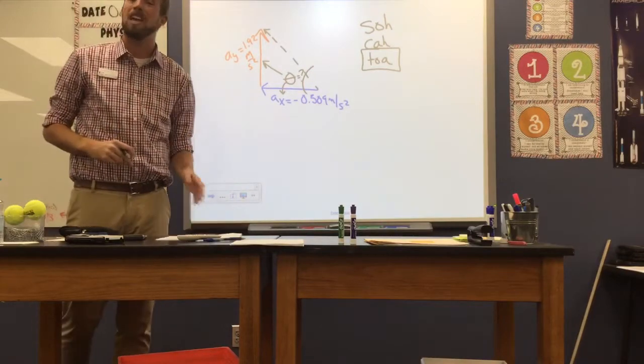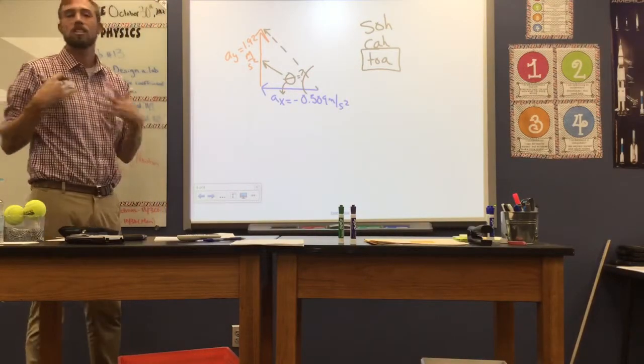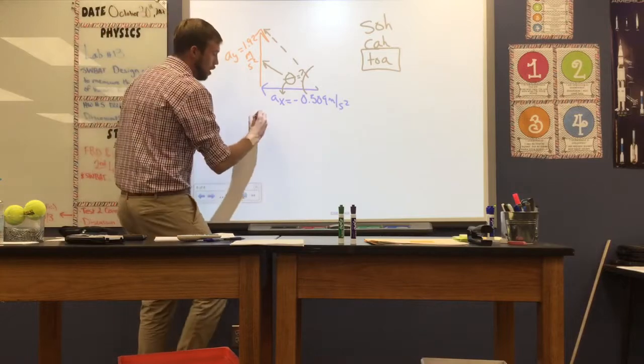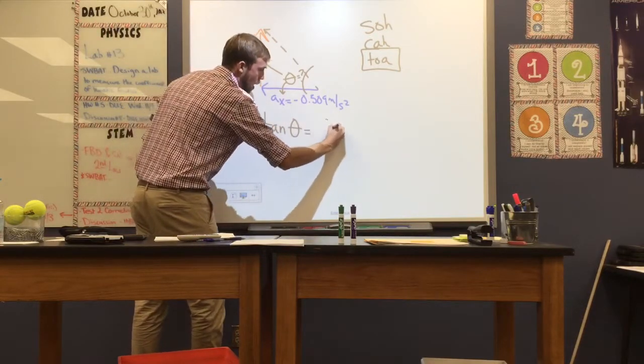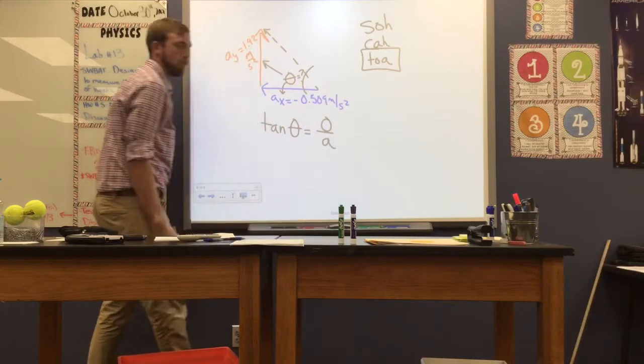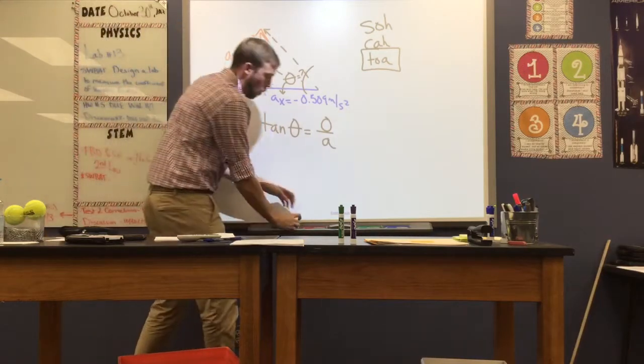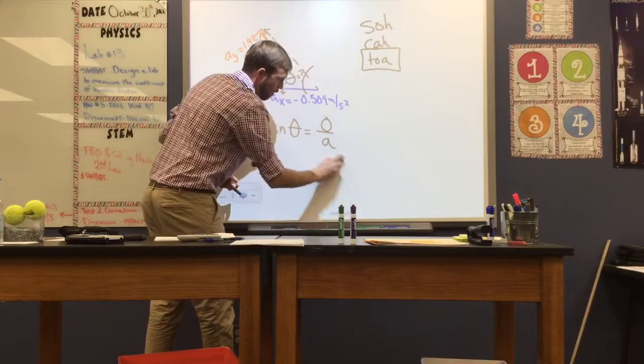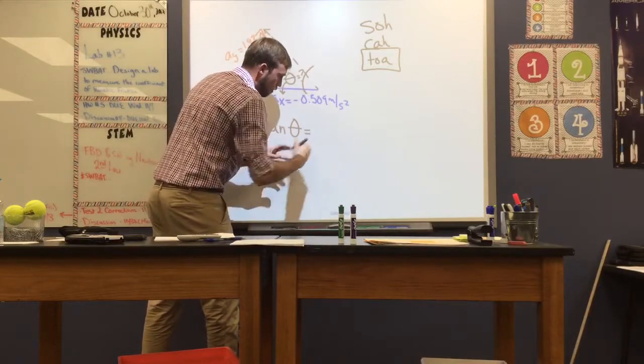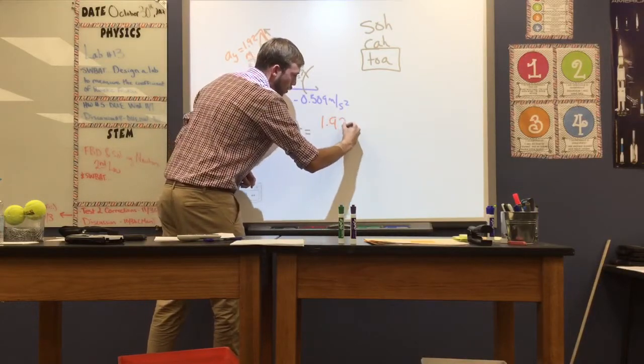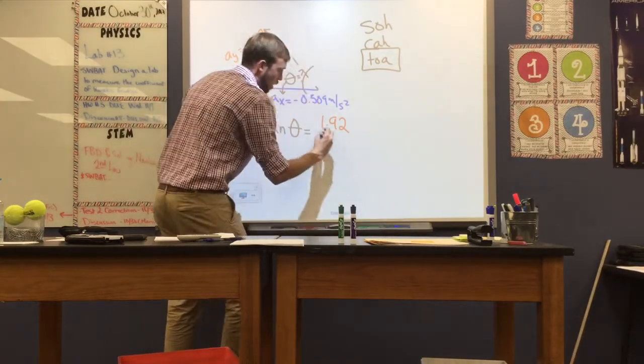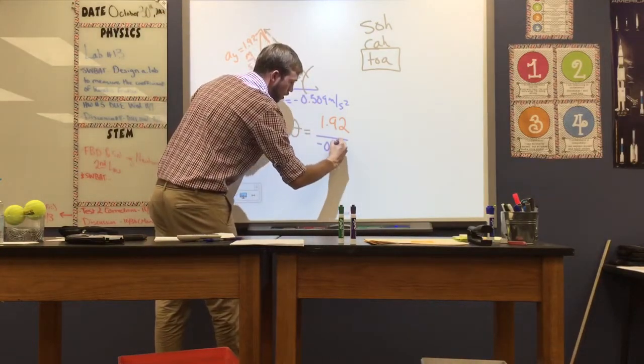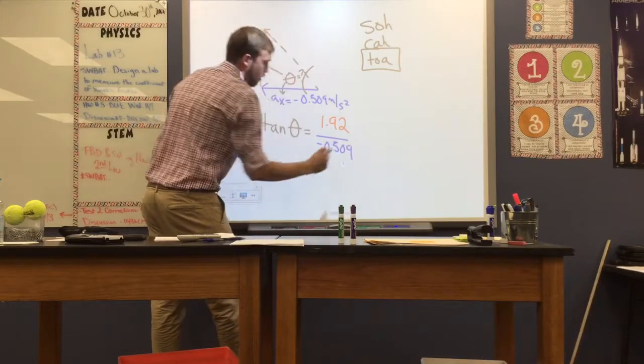Now when you use this function, make sure your calculator is in degree mode, otherwise it's not going to give you an accurate value. So I'll write out my expression. Tangent of theta is opposite over adjacent. Now my opposite here was 1.92, so I'll plug that value in. We won't need to worry too much about the units here. And my adjacent was negative 0.509.